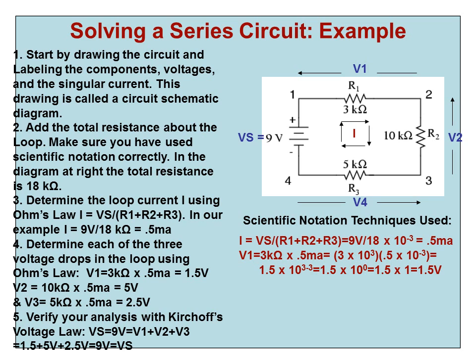Determine the loop current I using Ohm's law. I is going to be equal to Vs, 9 volts, divided by the sum of R1 plus R2 plus R3 ohmic values. In our example, I equals 9 volts divided by 18 kilo ohms.